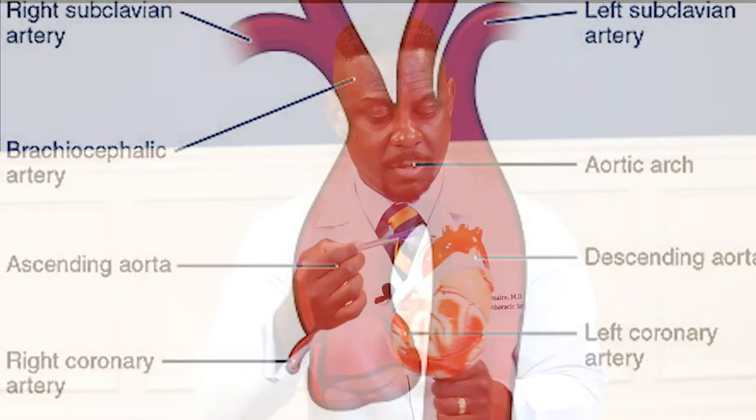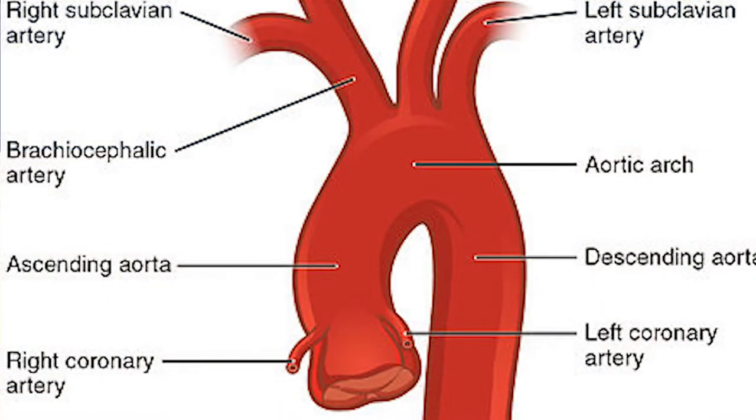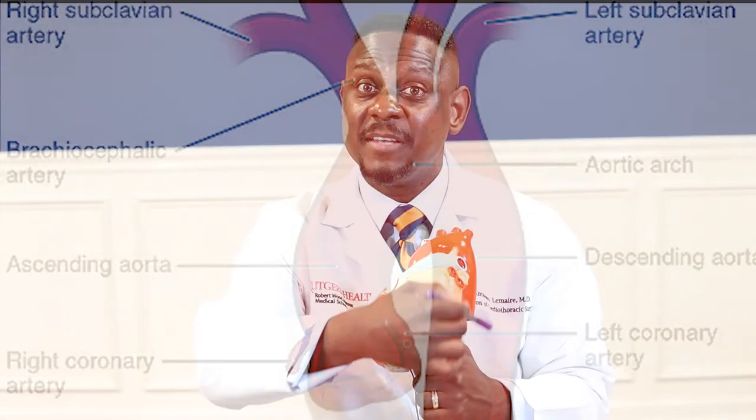Now, this aorta in the chest is divided into different structures. There's the ascending aorta, the arch of the aorta, and below the left subclavian artery, it's defined as the descending aorta. For the purposes of our discussion today, I'm just going to focus on the ascending aorta.